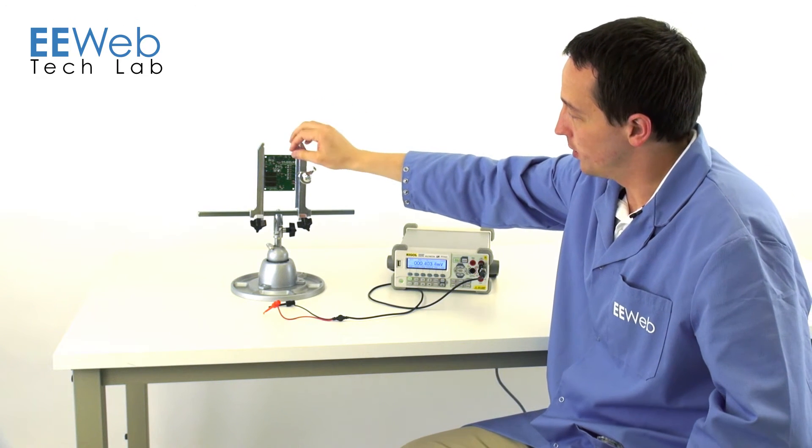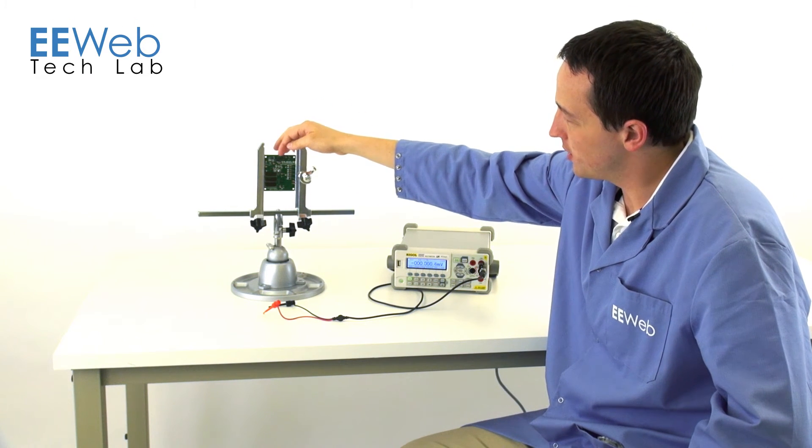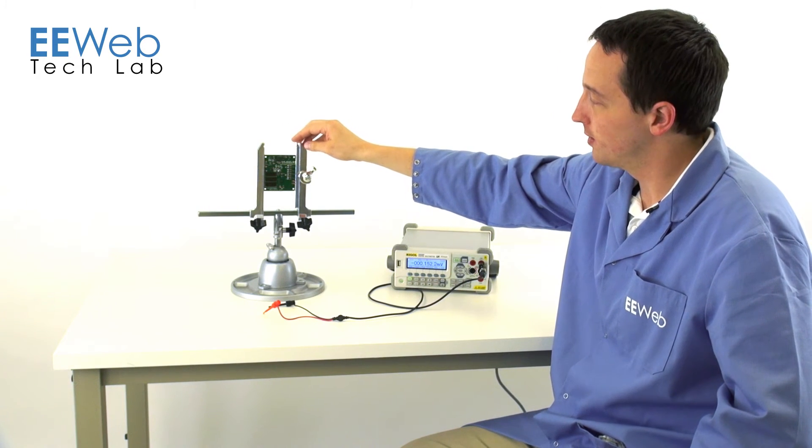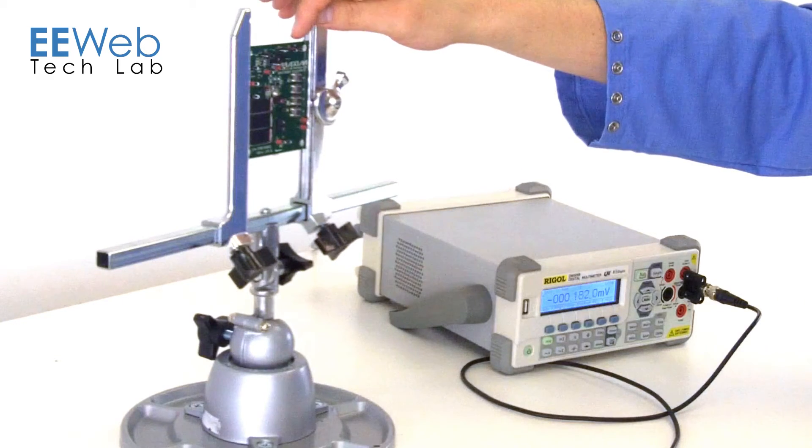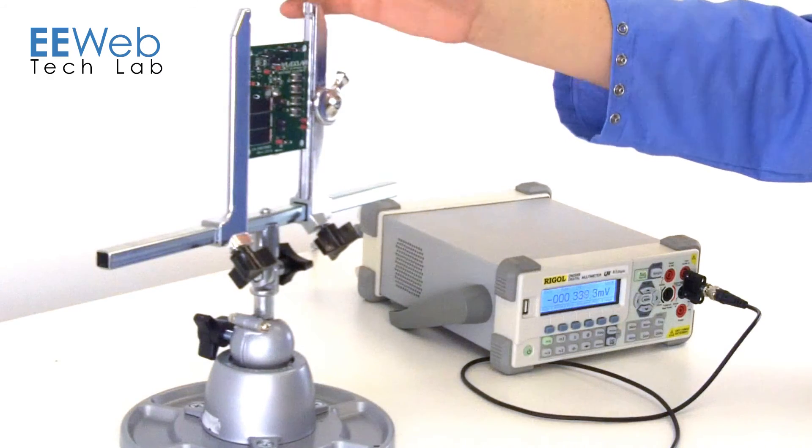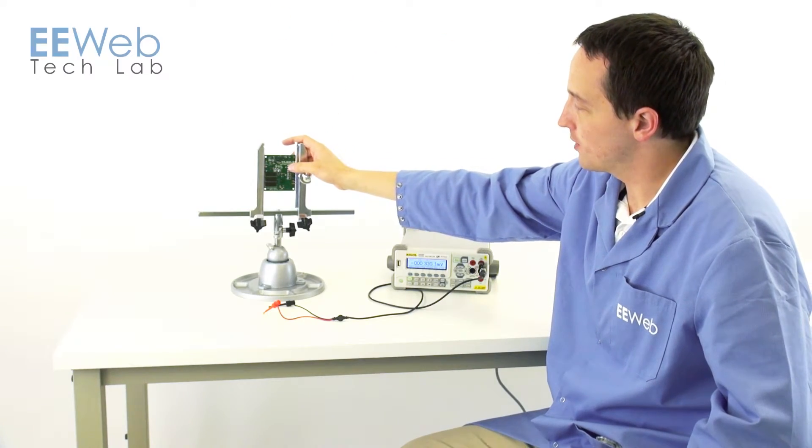So now what we can do is by changing this jumper, we can set the regulated output voltage. With it open like this, it's going to be at 3.3 volts. Turn it on, you press S1.